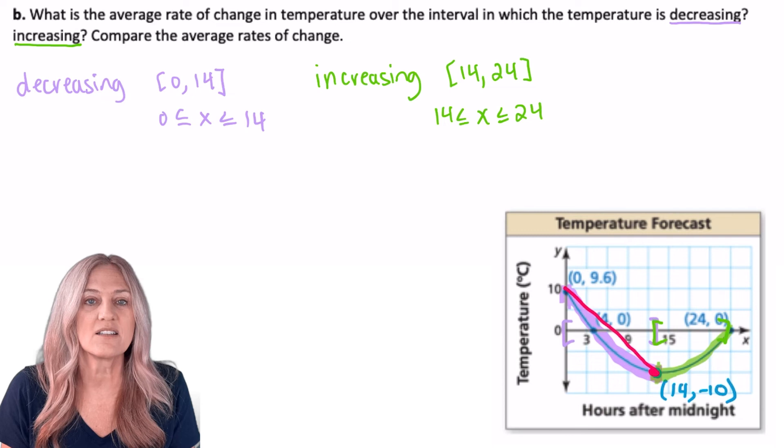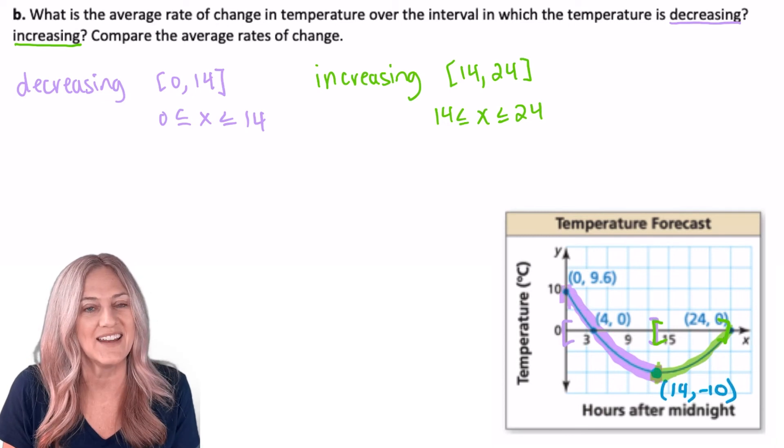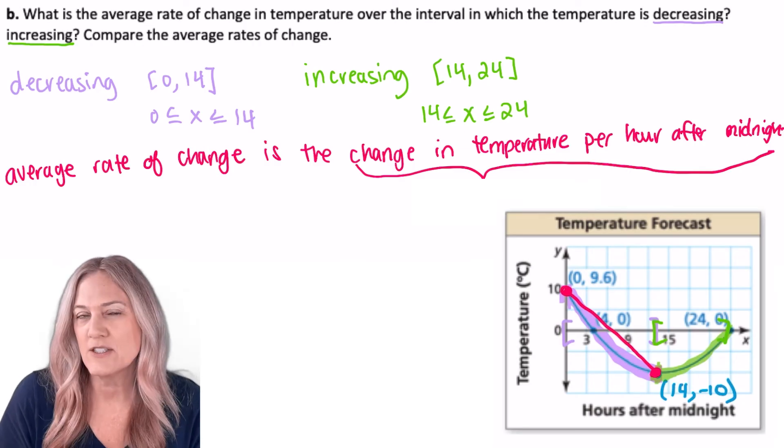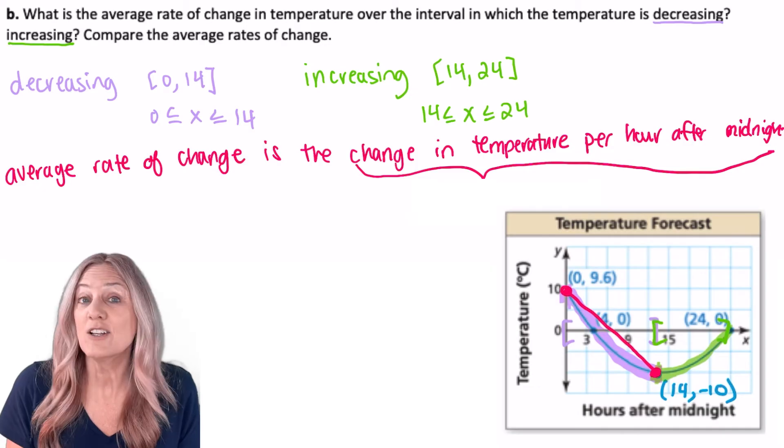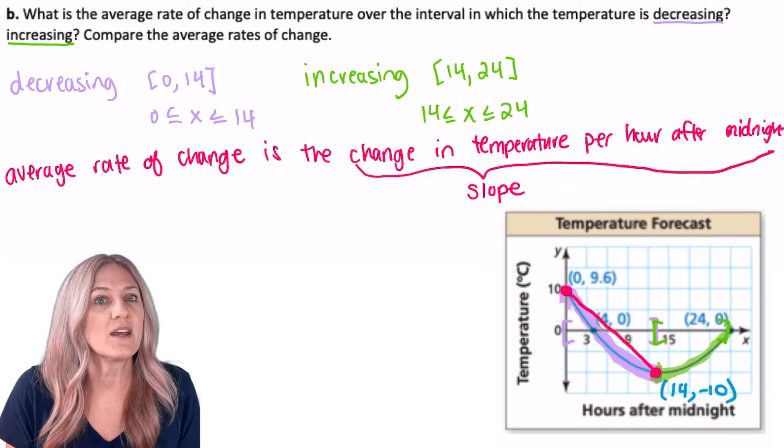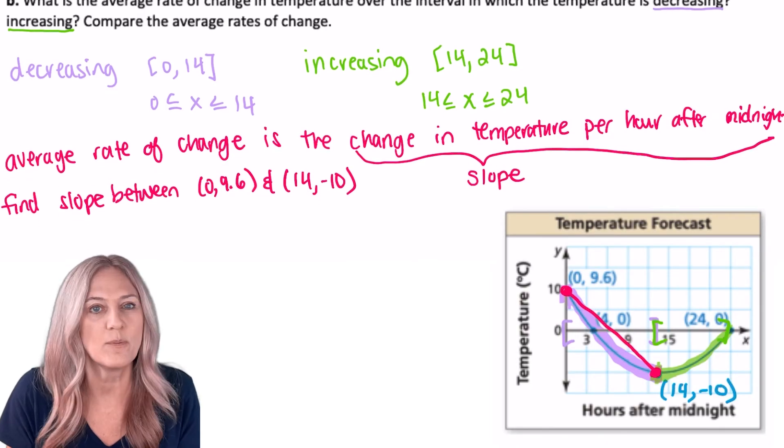So I'm looking for the slope of a secant line. Let's connect the two points from (0, 9.6) to (14, -10). All right, what does that sound like? Change in temperature per hour after midnight. Slope.